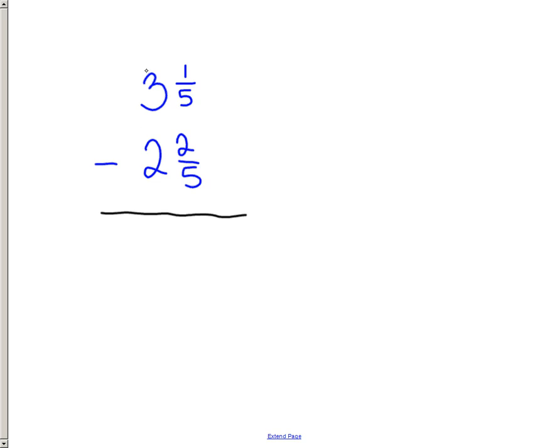We're going to borrow 1 from the 3. Make that a 2. And we're going to add this 1 that we borrowed from the 3. This is the 1 that we borrowed. It's going to be put onto the 1 5th. Now, since this has a common denominator of 5 and this is a 5, we need to make this 1 into a fraction with 5, so that will become 5 over 5.